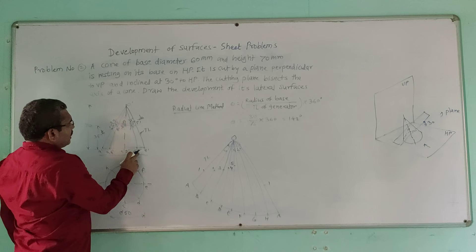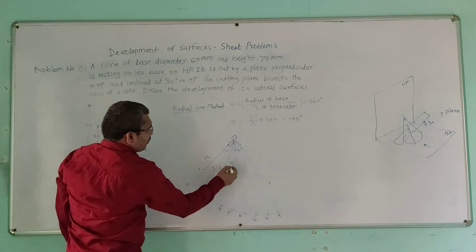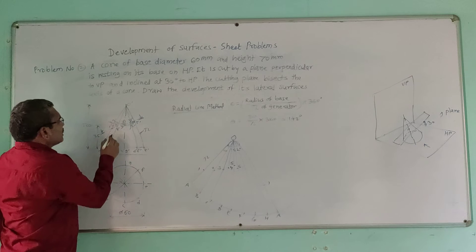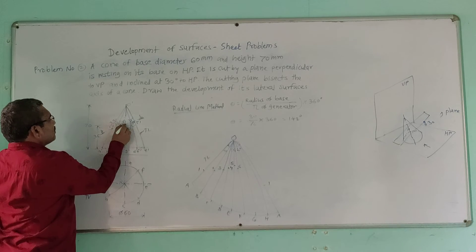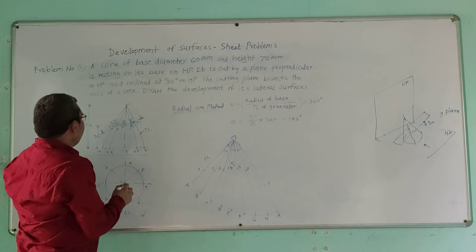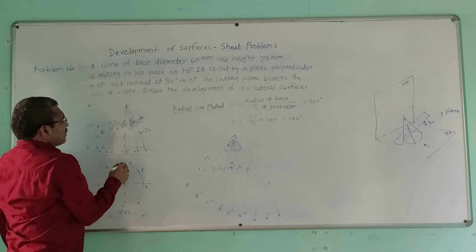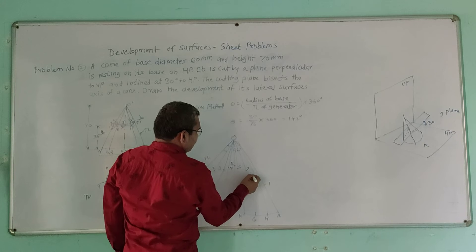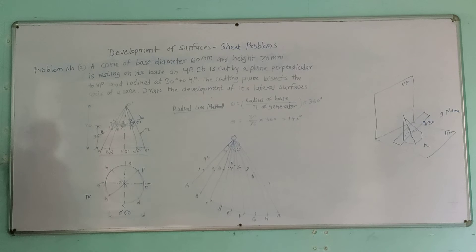Point 6' is on generator OF — take that distance and mark point 6 on OF. For point 7', note that generators 3 and 7 are at the same distance, so transfer accordingly and mark point 7 on OG. For point 8', generators 2 and 8 are at the same distance — mark point 8 on OH. Finally, point 1 is also marked from the last generator. All 8 points are now marked on the development.